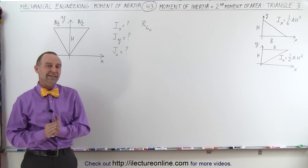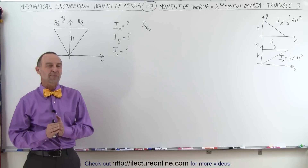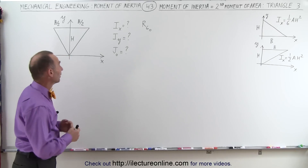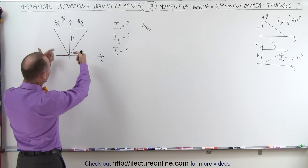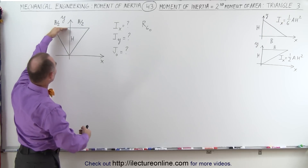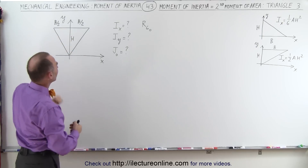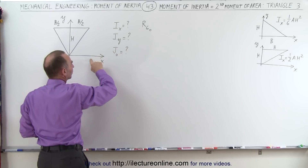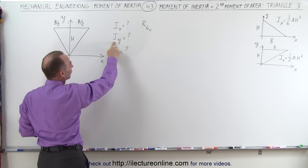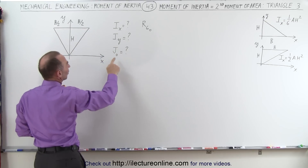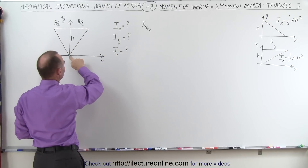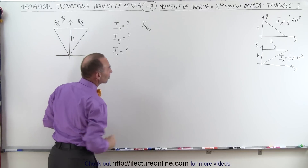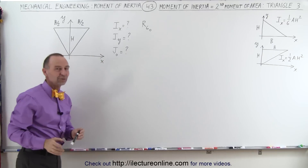Welcome to iLecture Online. Now let's use what we've learned so far to try and find the following. For this particular triangle, which is basically upside down with its base as far away as possible from the x-axis, we're going to find the moment of inertia relative to the x-axis, the moment of inertia relative to the y-axis, the moment of inertia relative to the origin, and the radius of gyration relative to the origin.